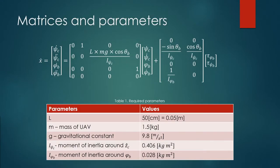Now we will go into what is given to us. We are given a 4x4 A matrix and a 4x2 B matrix — four states and two inputs. There are some fixed parameters given to us, displayed in a table. The last deciding factor of this state-space equation is theta B, which is the pitch angle of the drone. We know they are successfully applying a force of 15 Newtons at a pitch angle of 45 degrees. For this project, we are going to look at the system at 30, 45, and 60 degrees.